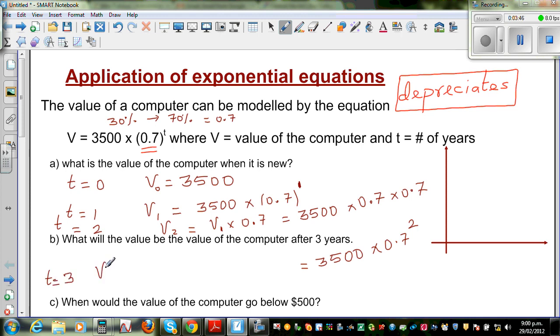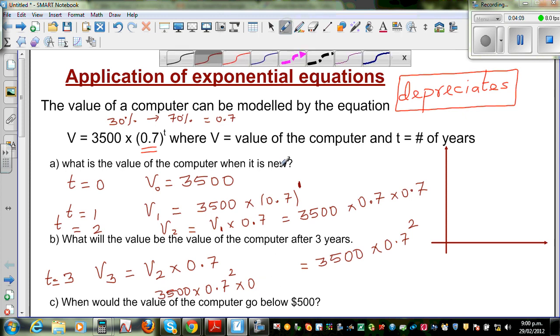your v3 would be the value after two years, that is v2, times the 70% of that, which is 0.7, which is 3,500 times 0.7 squared, times 0.7. Some of you, it may be a bit confusing, but basically you're finding 70% of the value every year. So this is 3,500 times 0.7 to the power 3, 0.7 cubed.